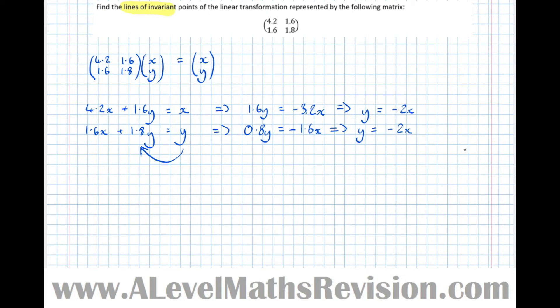There's an infinite number of solutions to this equation. No matter what values for x and y we substitute in the top equation, the same solutions occur for the bottom. Therefore, an invariant line occurs when the y component is minus 2 times the x component. Any point on the line y equals minus 2x is invariant.